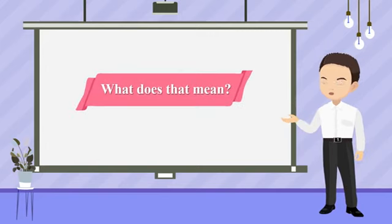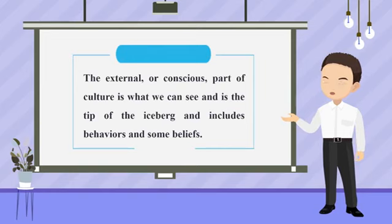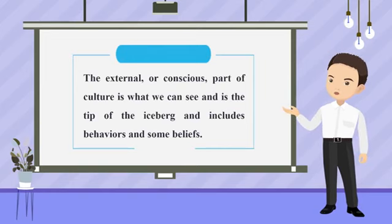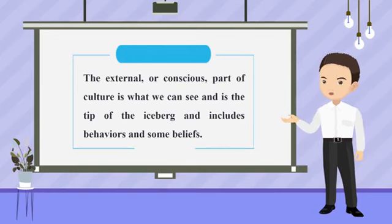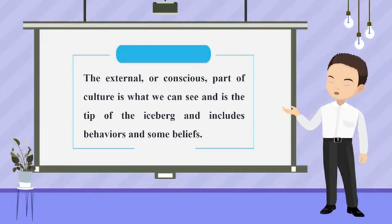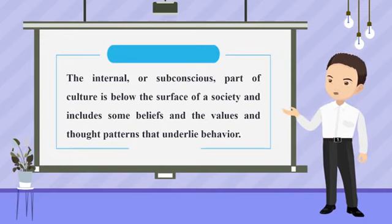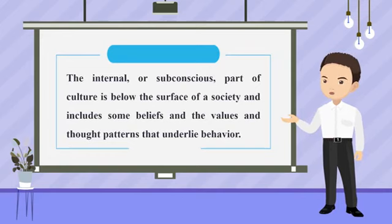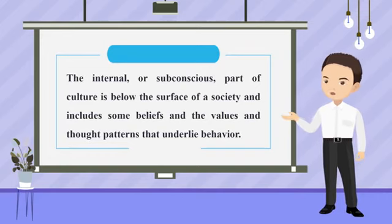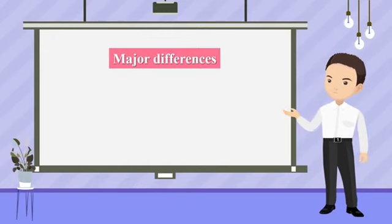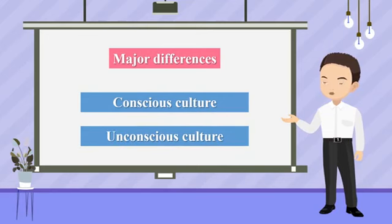What does that mean? The external, or conscious, part of the culture is what we can see — it is the tip of the iceberg and includes behaviors and some beliefs. The internal, subconscious part of the culture is below the surface of the society and includes some beliefs, the values, and the thought patterns that underlie behavior. There are major differences between the conscious and unconscious culture.